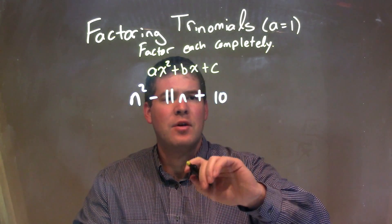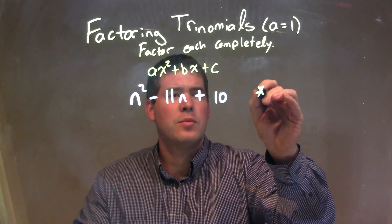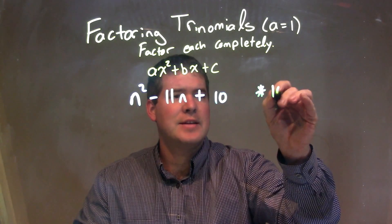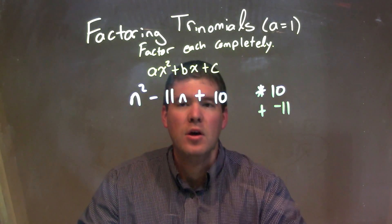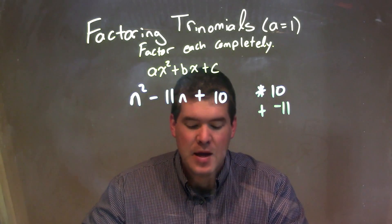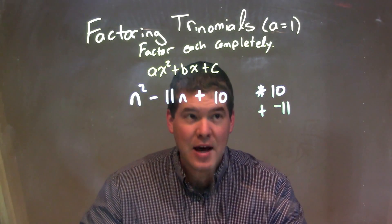And so we're going to ask ourselves this: What two numbers multiply to be our c value, that 10, but add to be a negative 11? So what two numbers multiply to be 10 and add to be a negative 11?